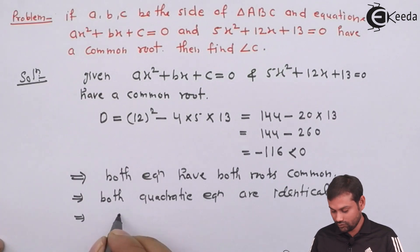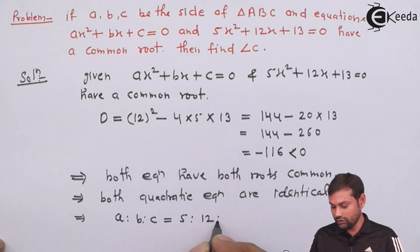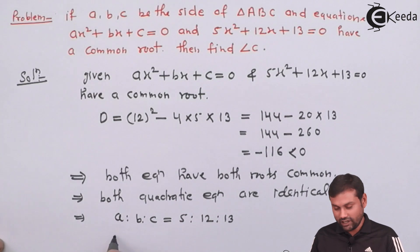That implies if they are identical, then A is to B is to C equals to what? 5 is to 12 is to 13. If we change this ratio, then what will be?